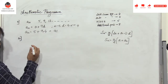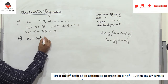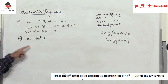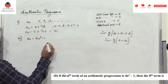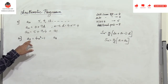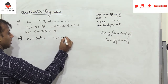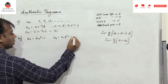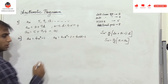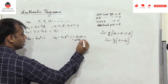If aₙ = 4n² - 1, find the 8th term a₈. Substitute n = 8: 4 into 8 squared minus 1 = 4 × 64 - 1 = 256 - 1 = 255. So 255 is the answer. This is a one-mark problem.